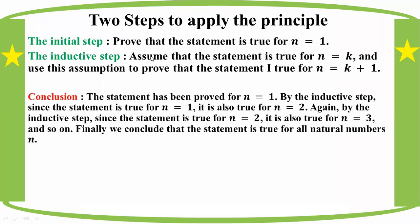Conclusion: the statement has been proved. Since the statement is true for n equal to 1, and n equal to 1 implies true for n equal to 2, and n equal to 2 implies true for n equal to 3, and so on — the statement is true for all natural numbers.